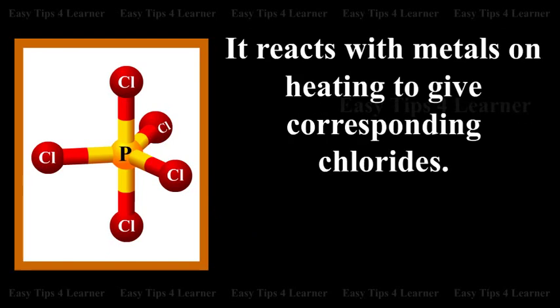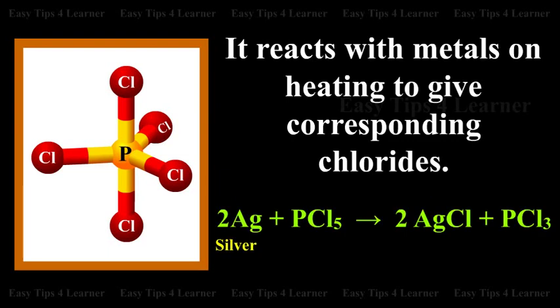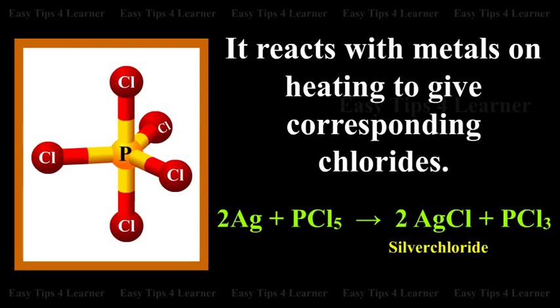It reacts with metals on heating to give corresponding chlorides. Silver plus phosphorus pentachloride gives silver chloride plus phosphorus trichloride.